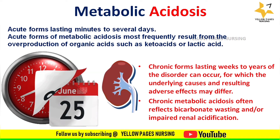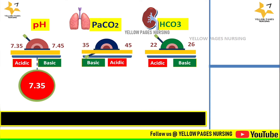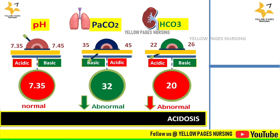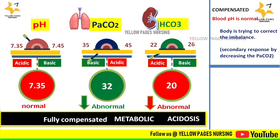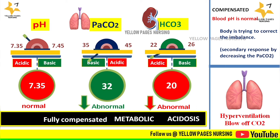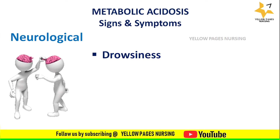In compensated metabolic acidosis, the pH is 7.35 (at the normal range), PaCO2 is 32 (below normal), and bicarbonate is 20 (below normal). The pH and bicarbonate both indicate acid, confirming metabolic acidosis. Since the pH is almost at the normal range, it is called fully compensated metabolic acidosis. The body corrects the imbalance through hyperventilation — blowing off carbon dioxide — which decreases PaCO2 below the normal range.